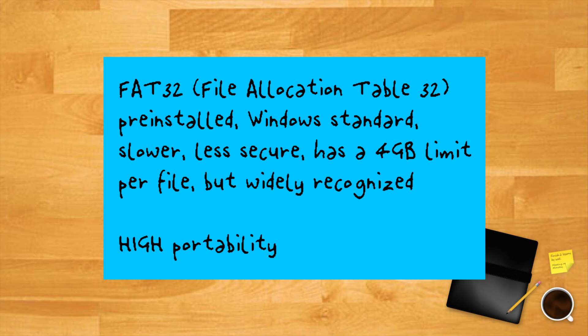FAT32, or File Allocation Table 32, is the file system that typically comes pre-installed on a USB drive. It was the Windows standard before NTFS. FAT32 is slower than NTFS, less secure, and has a 4 gigabyte limit per file, but is widely recognized by all major operating systems. If you will be using the USB drive in a highly heterogeneous environment and portability is your main concern, FAT32 is your option.